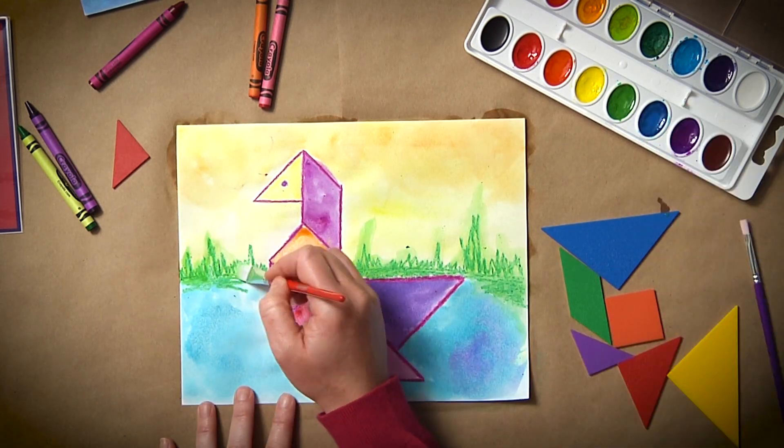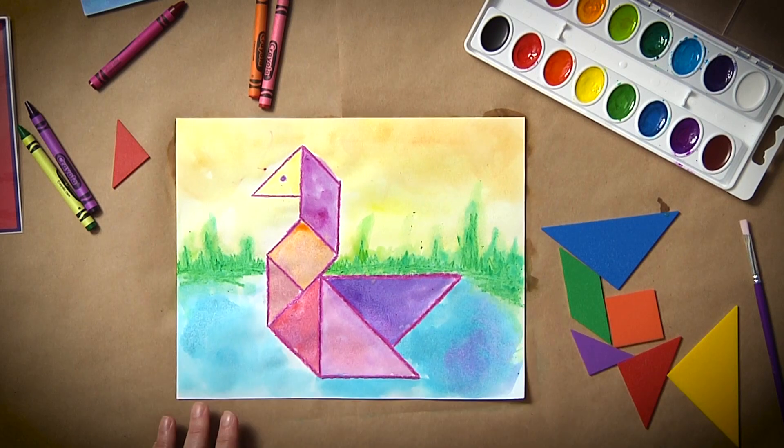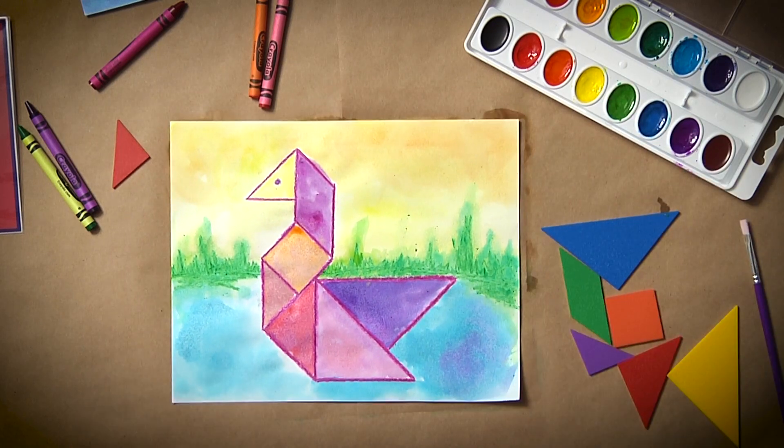If watercolors aren't an option for your students, this lesson can easily be adapted to work with crayons, markers, or even colored pencils. You may want to have them finish the piece by outlining their animal in black.